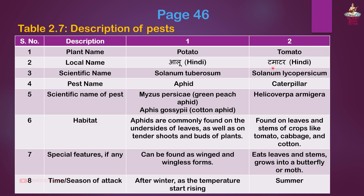Second pest: Tomato. Local name: Tomato in Hindi. Scientific name: Solanum lycopersicum. Pest name: Caterpillar. Scientific name of pest: Helicoverpa armigera. Habitat: Found on leaves and stems of crops like tomato, cabbage and cotton. Special features: Grows into a butterfly or moth. Season of attack: Summer.